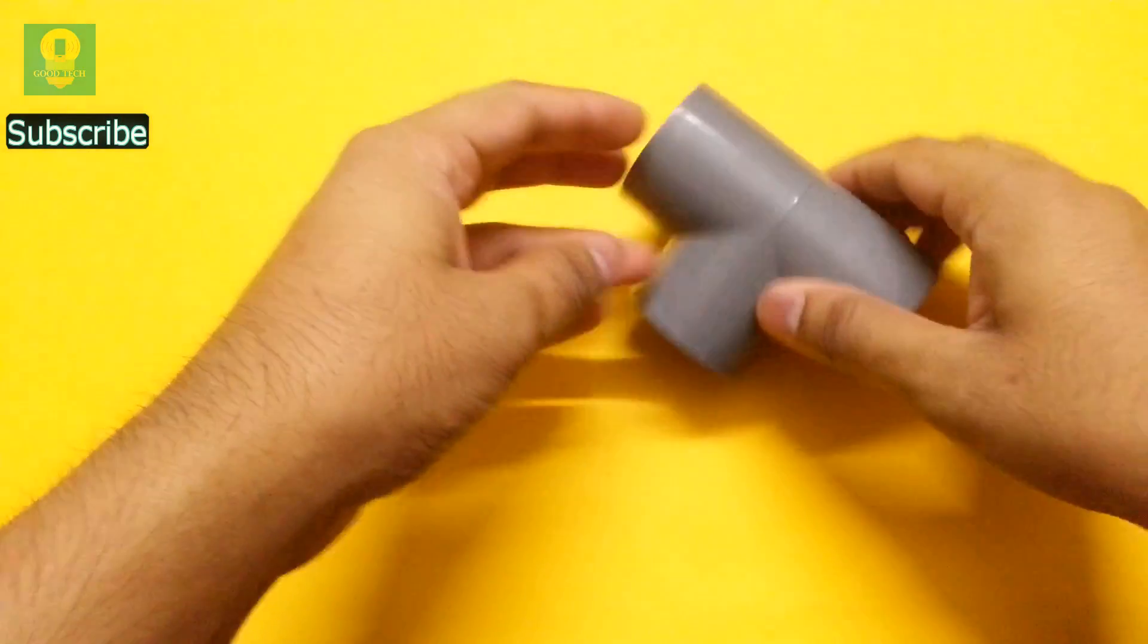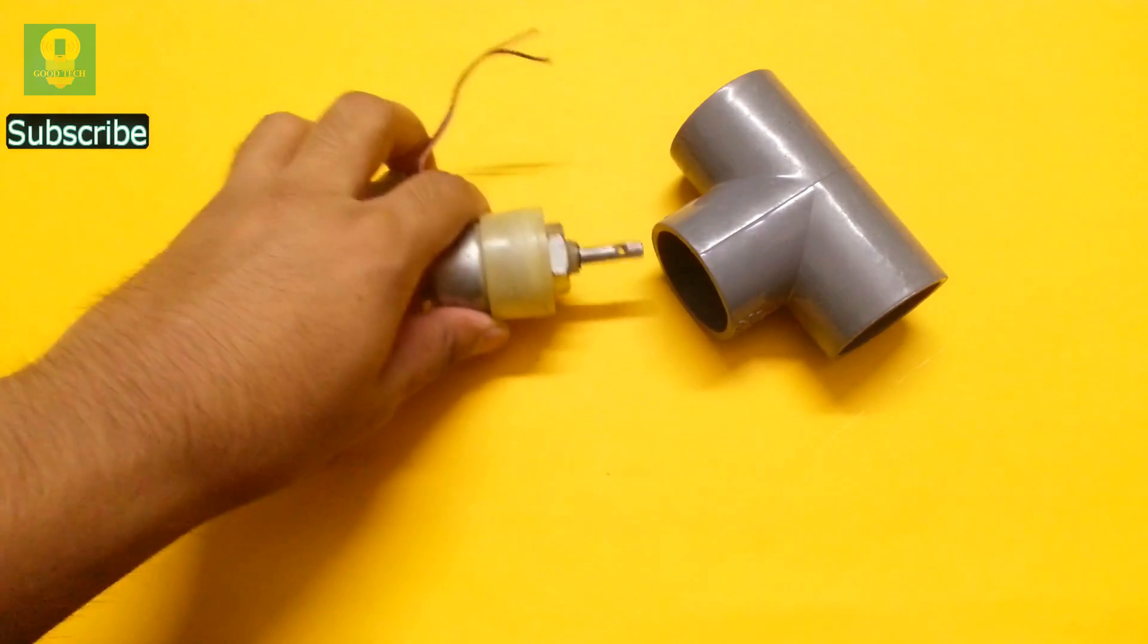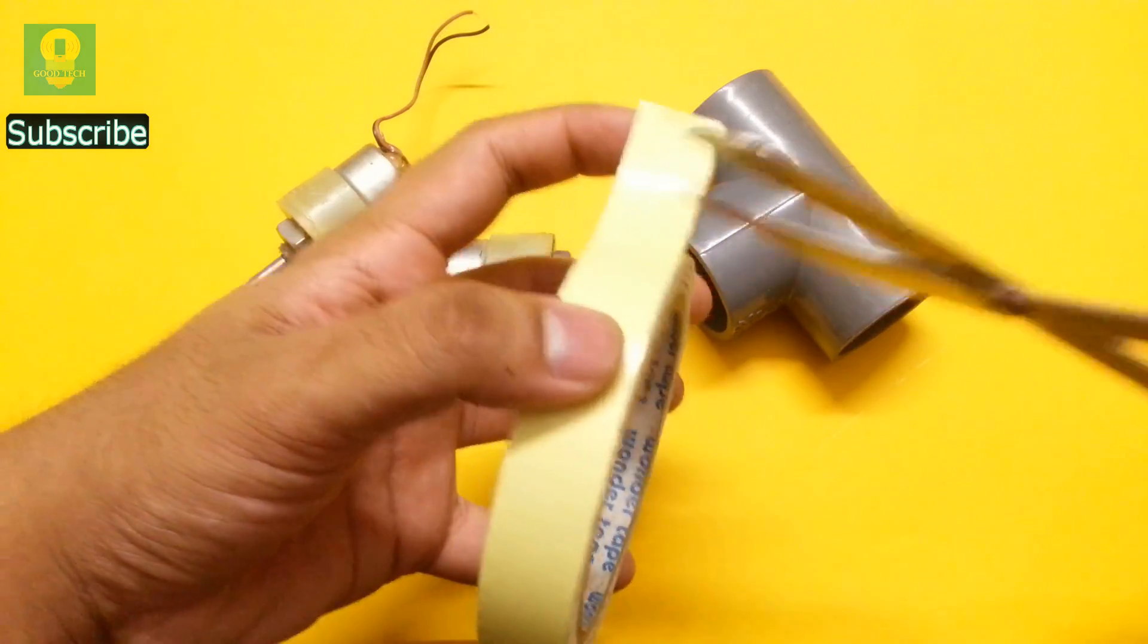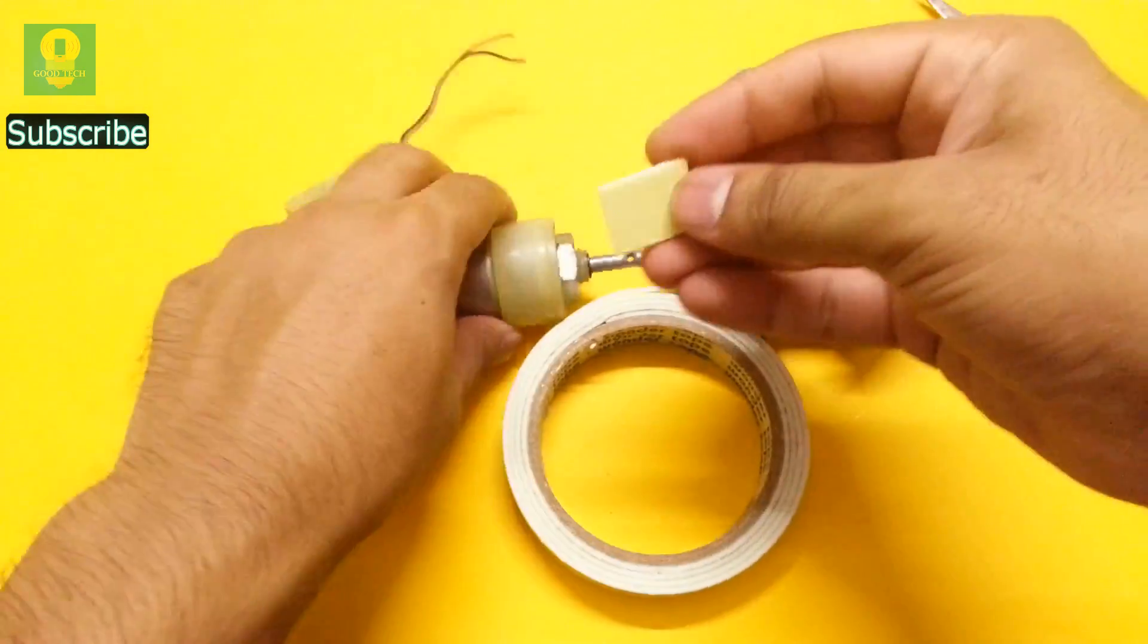To start, take a PVC tee and two geared DC motors. Put a few small pieces of double-sided tape around the motors.